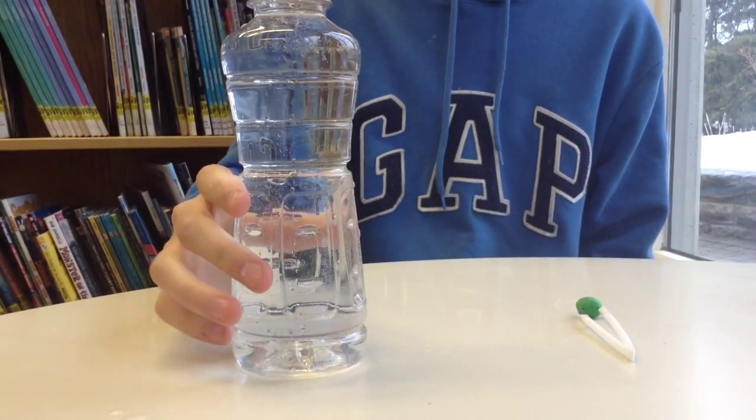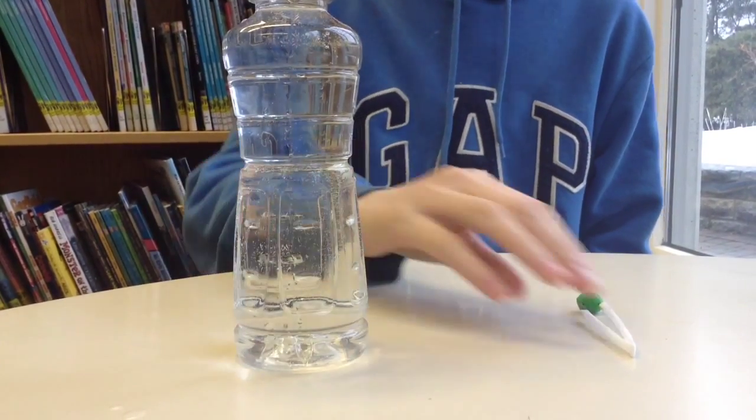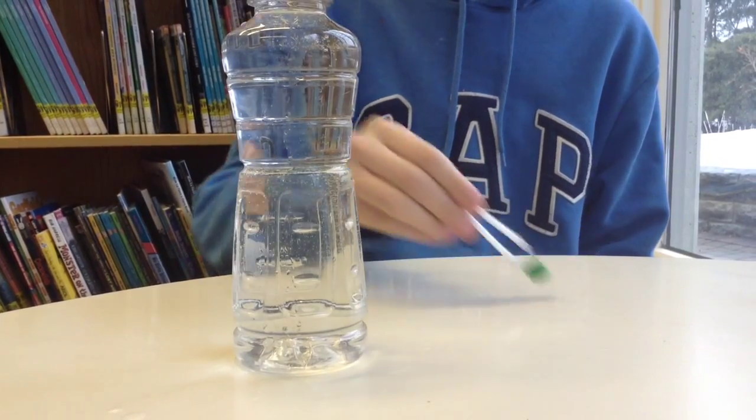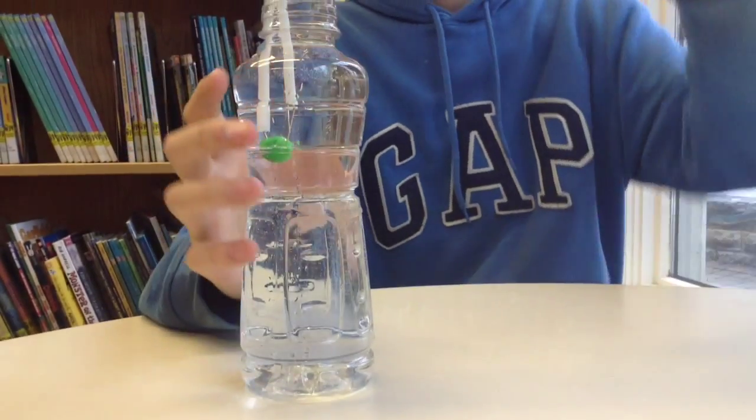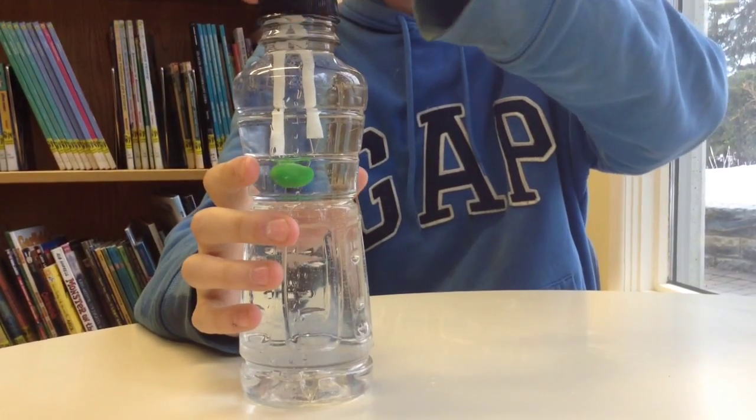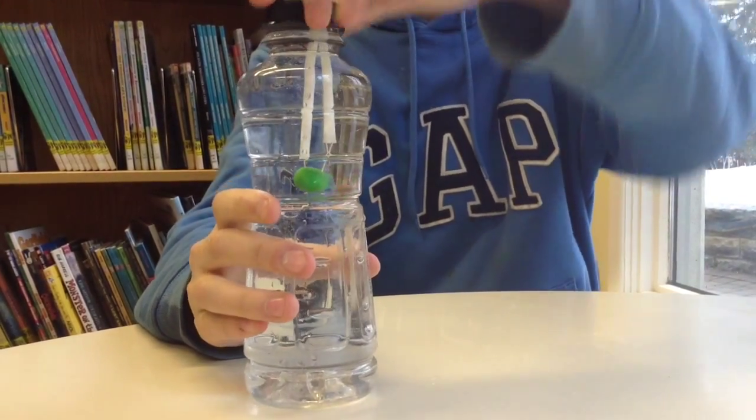Step 5. Then you're going to want to fill the bottle full of water. Insert this into the top of the bottle. When that is done, you will put the cap on, and your submarine will be done.